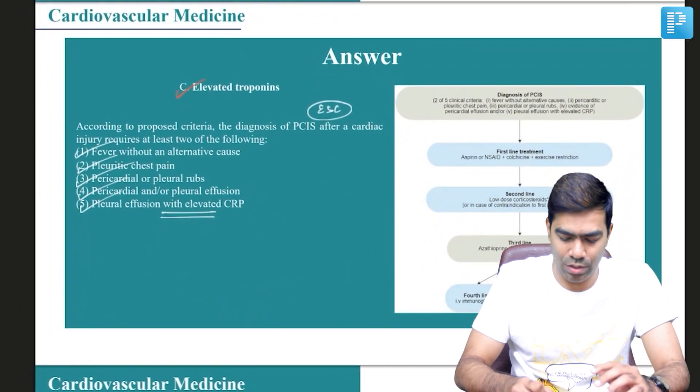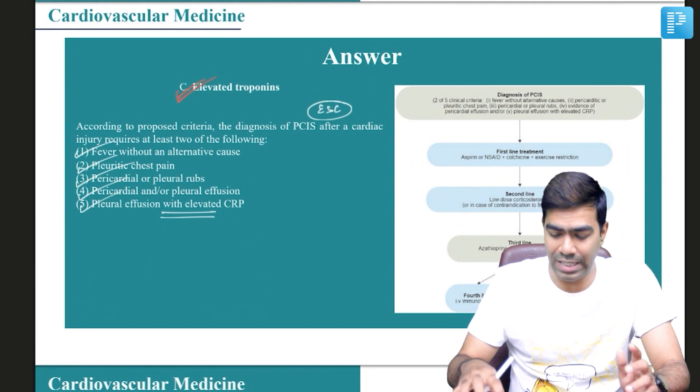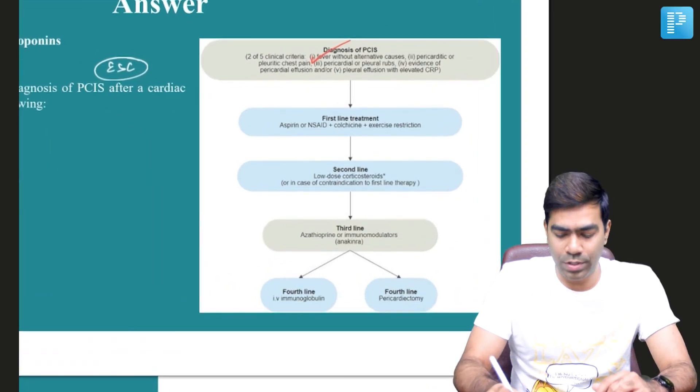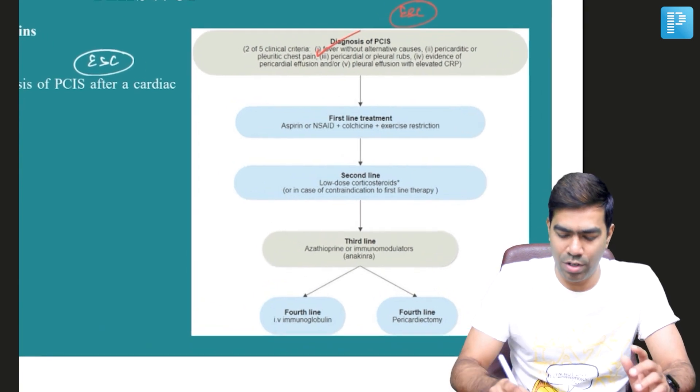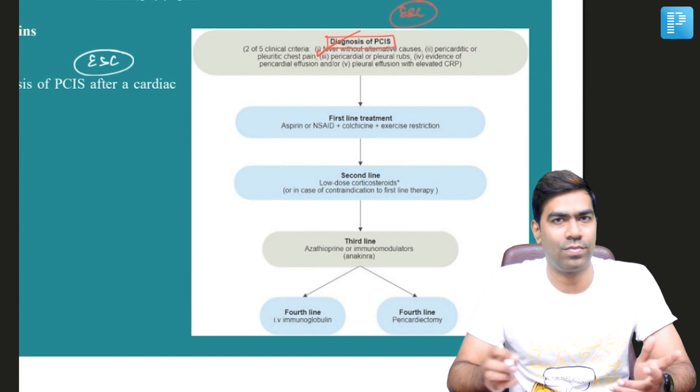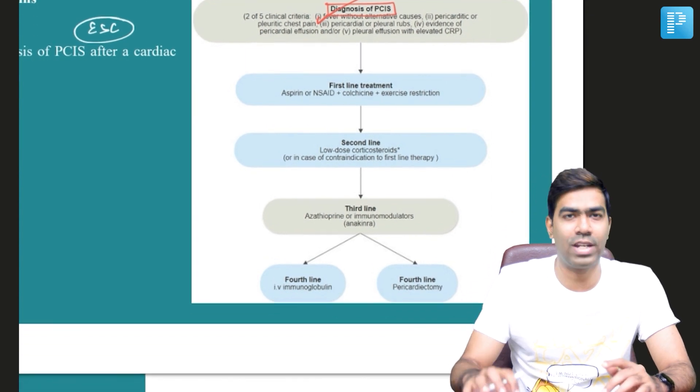That is the reason why elevated troponins is not something that is used in the criteria for diagnosis of post cardiac injury syndrome. That is why the right answer for this question is going to be option C, elevated troponins. This flowchart is an excerpt from the European Society of Cardiology guidelines with regards to post cardiac injury syndrome. You all know how to make a diagnosis of PCS, which we have discussed already, but how will you treat it?